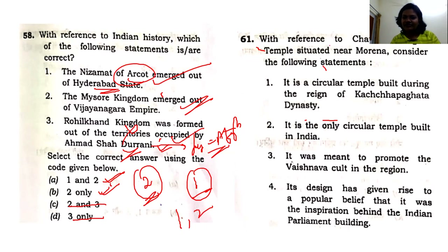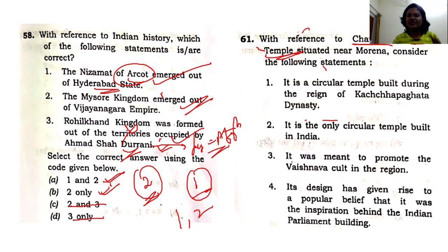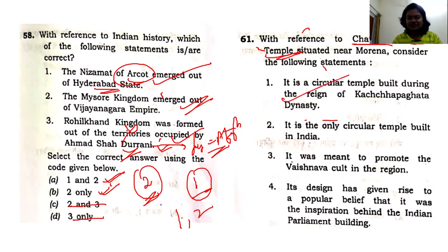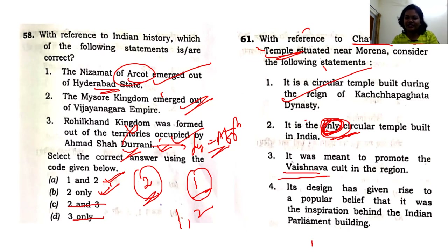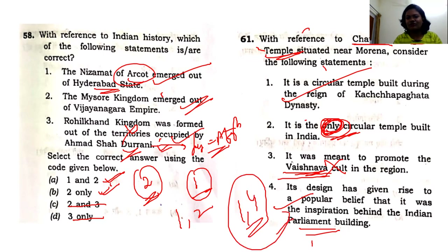With reference to the Chausath Yogini temple: this topic was lifted from history because of the recent reframing of our Parliament building, which was inspired by this temple. UPSC does lift questions related to current references and links them through geography or other subjects. The first statement about the dynasty and circular form is correct. The Vaishnavite cult option is wrong — Yogini is a female form of a goddess. The fourth option, that Parliament was inspired by this temple, is correct. So the answer is options one and four.